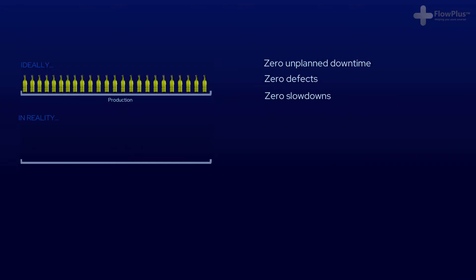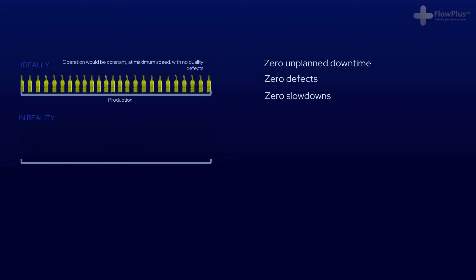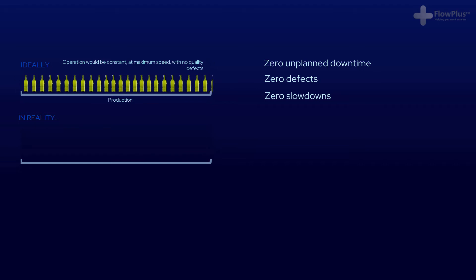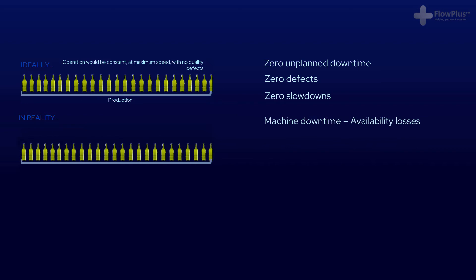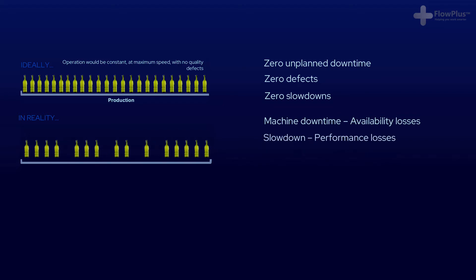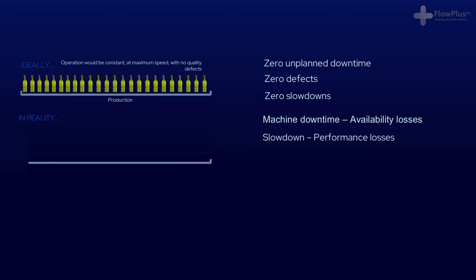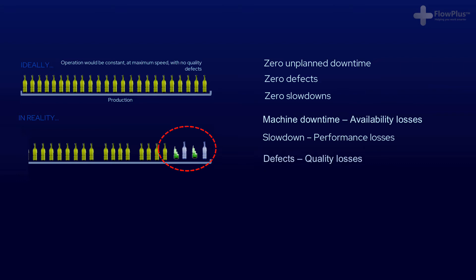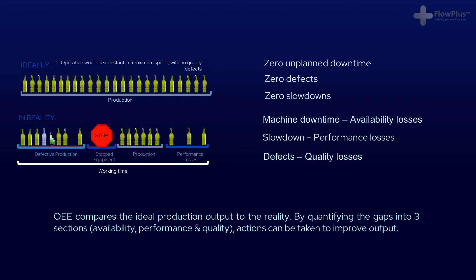If we imagine a bottling line, in an ideal world we would have it running with zero problems: zero unplanned downtime, zero slowdowns, and zero defects. In reality, we have availability losses associated with breakdowns, slowdowns which affect the performance of the machine, and quality problems when defective products are produced. OEE aims to quantify these three different types of output loss so that improvement initiatives can be launched to increase the OEE value and therefore the effectiveness of our machines.